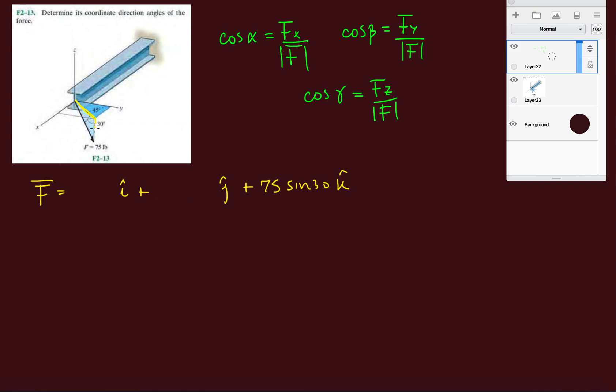The k component is going to be 75 sine 30. Sine 30 because we're looking at this small triangle here. It's going to be some force in the xy plus some force in the z component. The adjacent side is cosine and the opposite side is the sine, and the sine corresponds to the force vector that's parallel to the z axis. That's what we did: 75 sine 30.